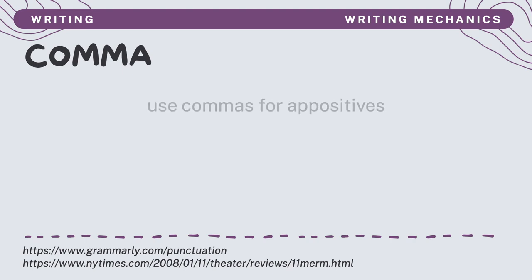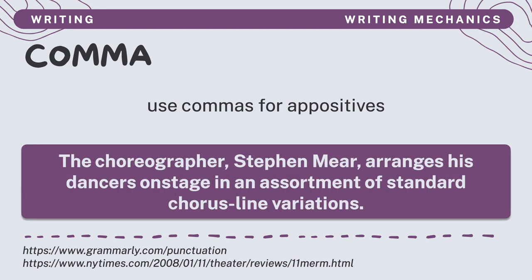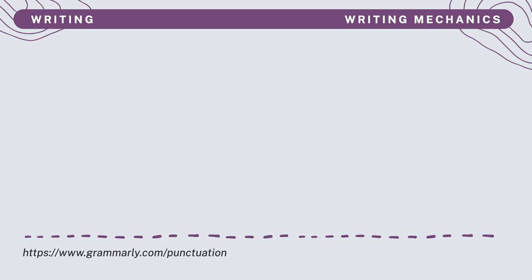Commas are also used for appositives. An appositive is a noun or noun phrase that refers to the same thing as another noun in the same sentence. Often, the appositive provides additional information about the noun or helps to distinguish it in some way. In the example shown, the appositive is Stephen Mir. It gives out additional information about the choreographer, which is the subject in the sentence.